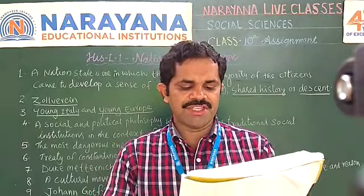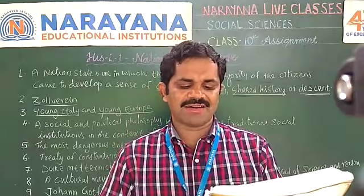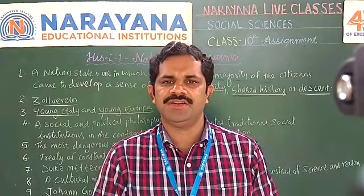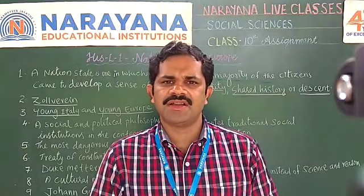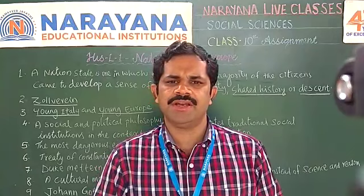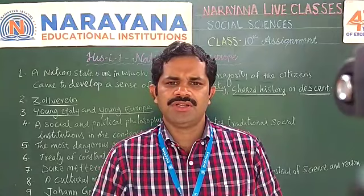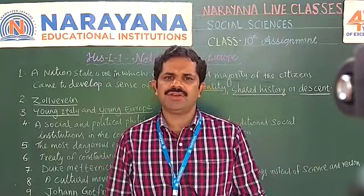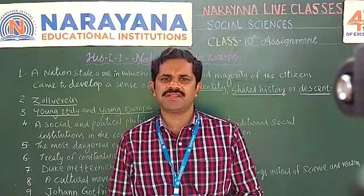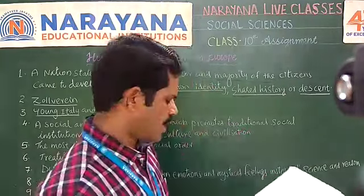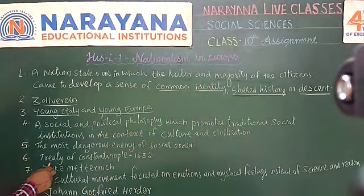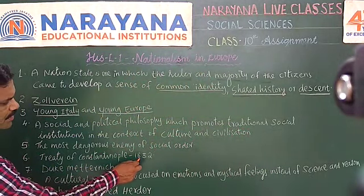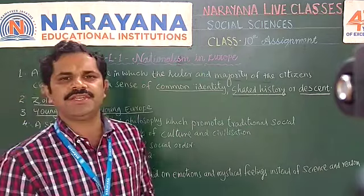Question No. 6: Which treaty recognized Greece as an independent nation? According to the Treaty of Constantinople of 1832, Greece was recognized as an independent nation. So the answer to Question No. 6 is: Treaty of Constantinople in the year 1832.